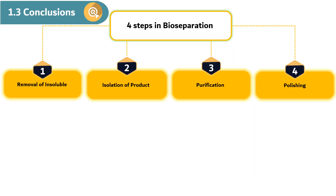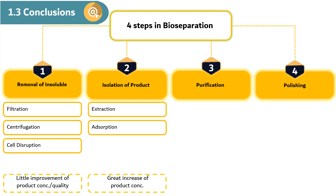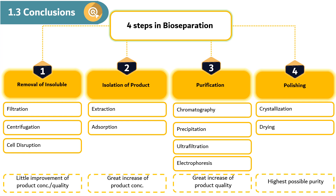In brief, there are four major steps in bioseparation. The first step is removal of insoluble to remove solid from the liquid solution. The second step is isolation of product, resulting in a large increase of product concentration. The third step is purification, resulting in a large increase of product quality. The fourth step is polishing to achieve the highest possible purity, often required for pharmaceuticals.